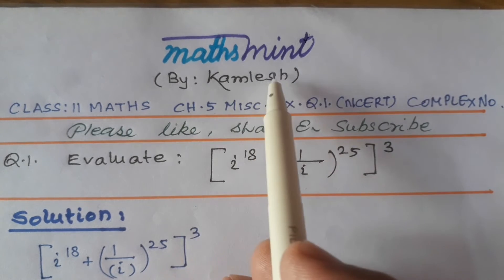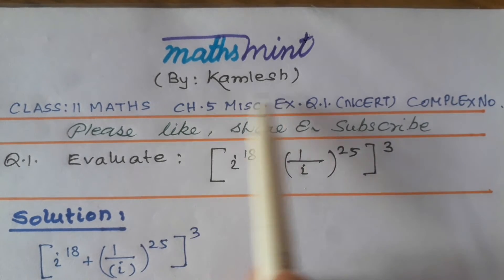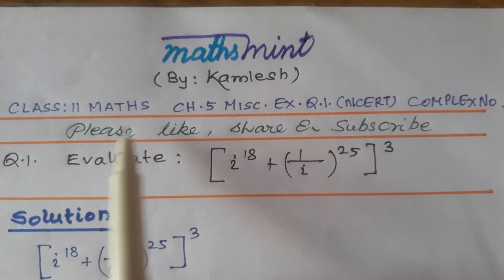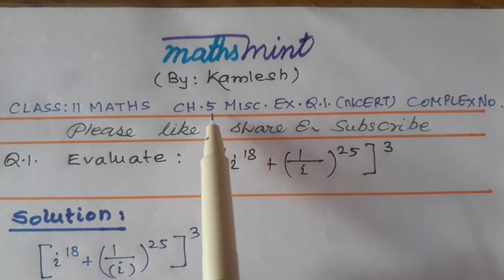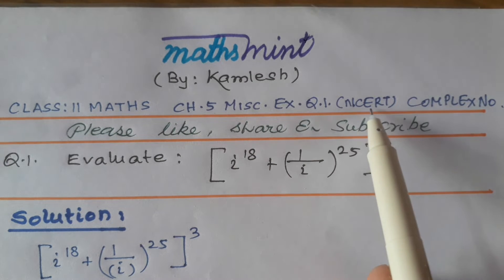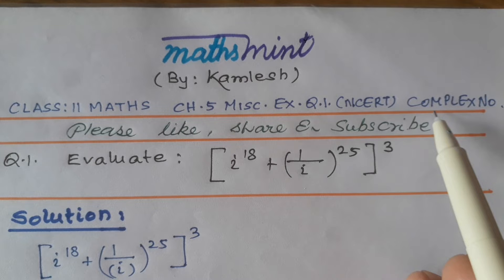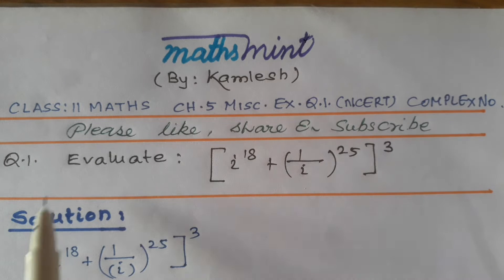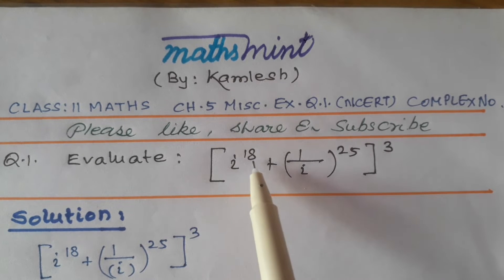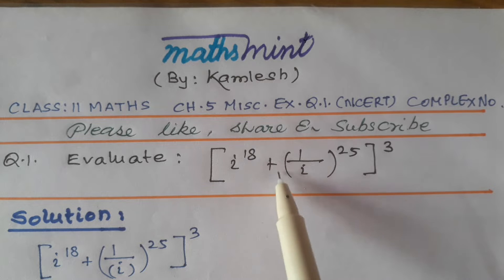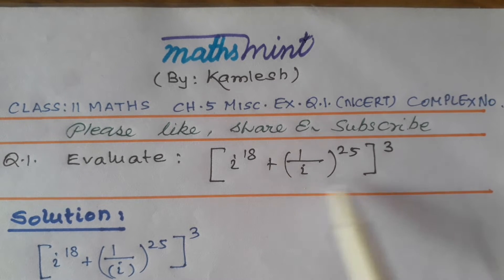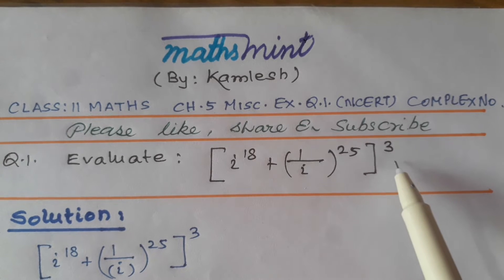Hello students, welcome to channel Maths Mint by Kamlesh. This is a question for class 11 maths, chapter 5 miscellaneous exercise question 1 from NCERT. The chapter is complex numbers. In the question it is given: evaluate i^18 plus 1 by i^25, all cubed.